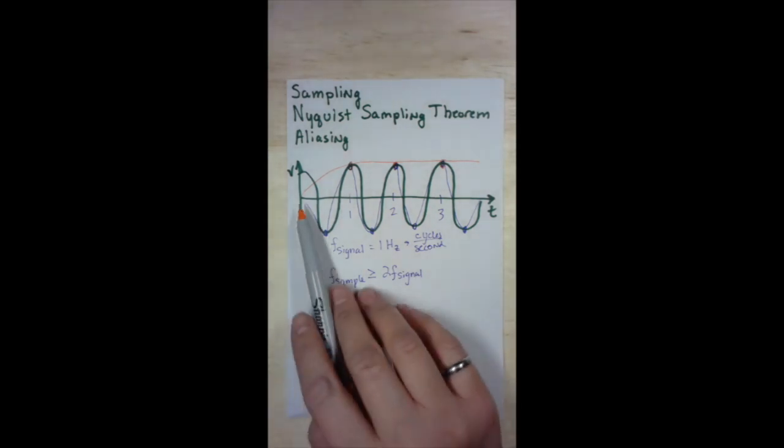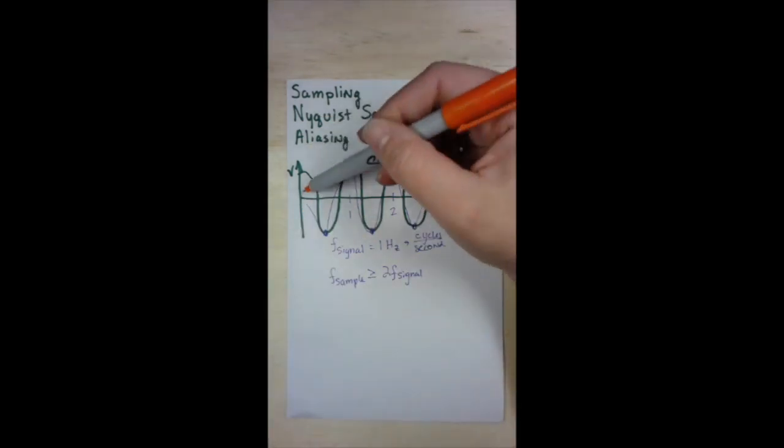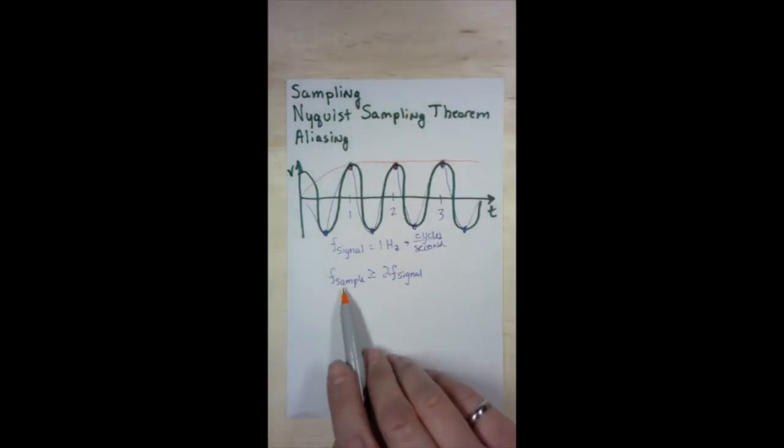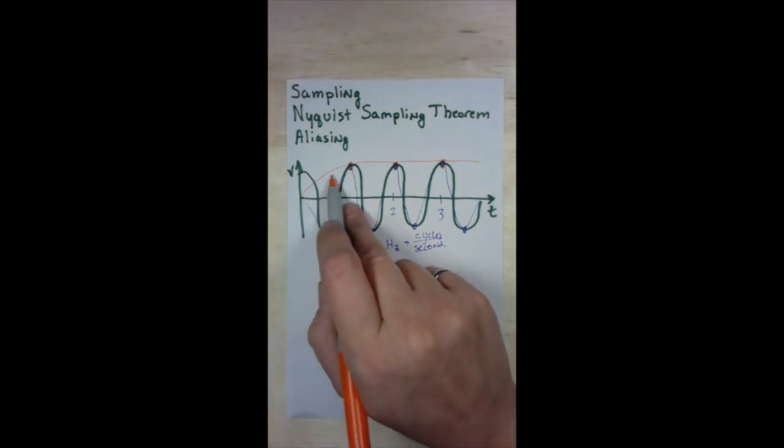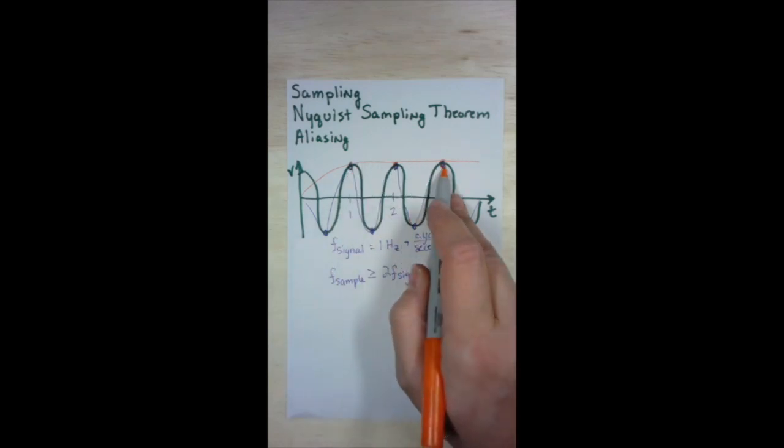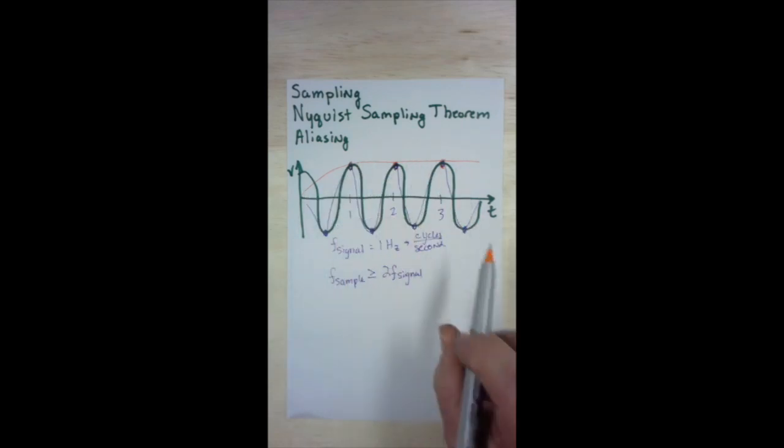aliasing is when we sample at a rate lower than the Nyquist sampling theorem states. And the signal, once reconstructed, is not representative of the actual signal. All right. Thanks for listening.